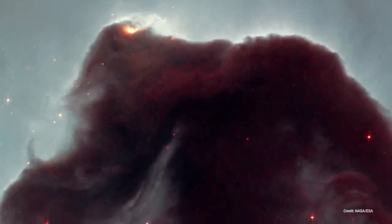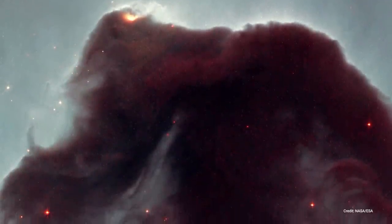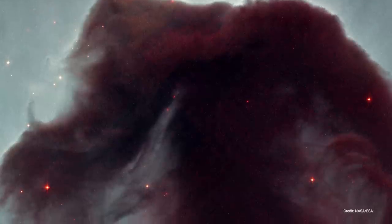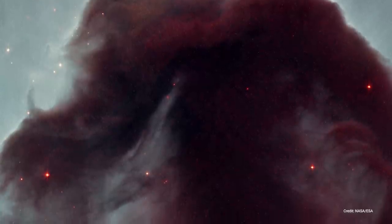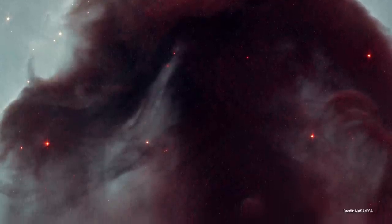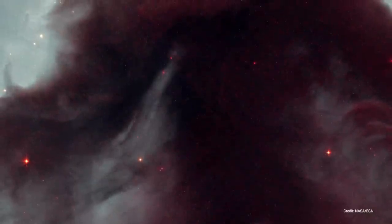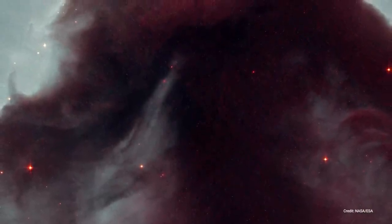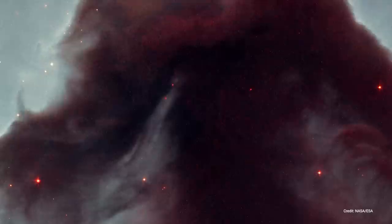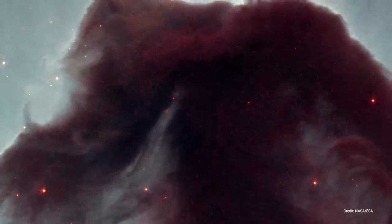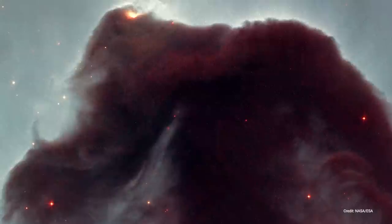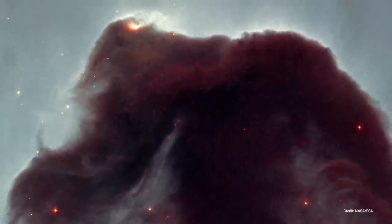The Horsehead Nebula, often captured in photographs for its unique shape and beauty, is also known by its less glamorous name, Barnard 33. Its silhouette is cast against the backdrop of the glowing nebula, IC 434. James Webb Space Telescope has brought us an intimate portrait of this galactic wonder, revealing its intricate structure in fine detail. This detailed imagery of the Horsehead is being released in celebration of the Space Telescope's 11th year of orbiting and observing our universe.